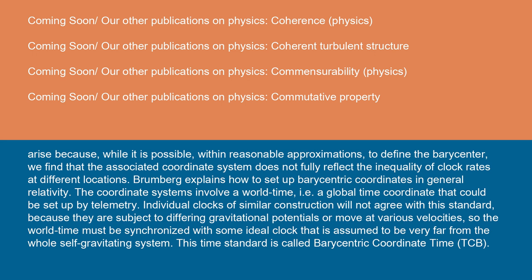The coordinate systems involve a world time, i.e., a global time coordinate that could be set up by telemetry. Individual clocks of similar construction will not agree with this standard because they are subject to differing gravitational potentials or move at various velocities. So the world time must be synchronized with some ideal clock that is assumed to be very far from the whole self-gravitating system. This time standard is called Barycentric Coordinate Time (TCB).